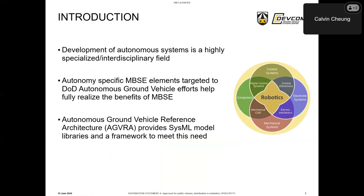The development of autonomous systems is a highly specialized field that brings together technical disciplines including control systems, software engineering, mechanical engineering, and electrical engineering. Autonomy-specific MBSE elements targeted to DoD autonomous ground vehicle efforts can help bring these various fields together in a common model-based approach to get the full benefits of MBSE. AGVRA, or the Autonomous Ground Vehicle Reference Architecture, developed by GVSC, aims to provide the elements needed for successful autonomous ground vehicle MBSE efforts, including model libraries and a framework within which government and industry defense robotics partners can meet their objectives and realize MOSA principles.